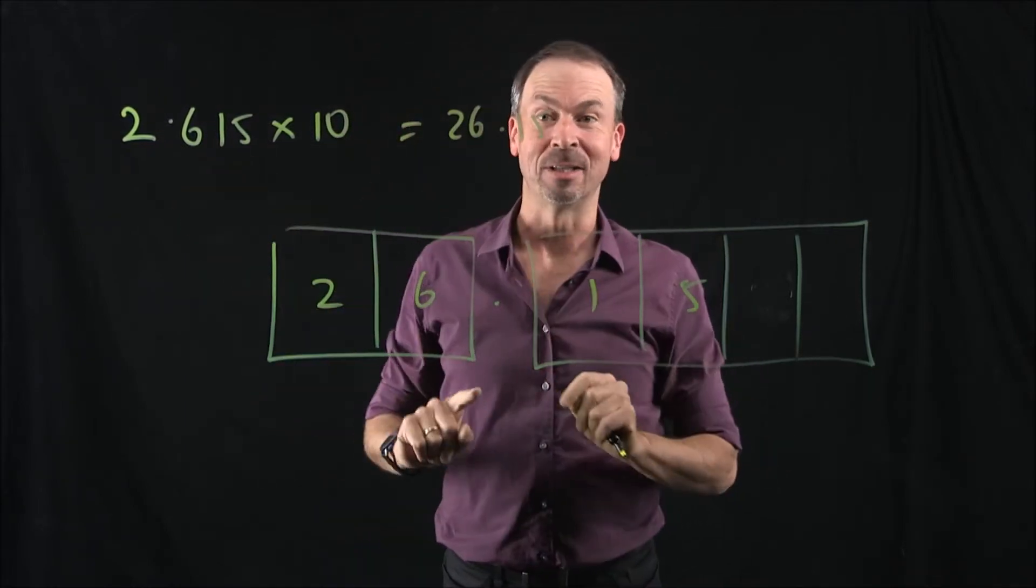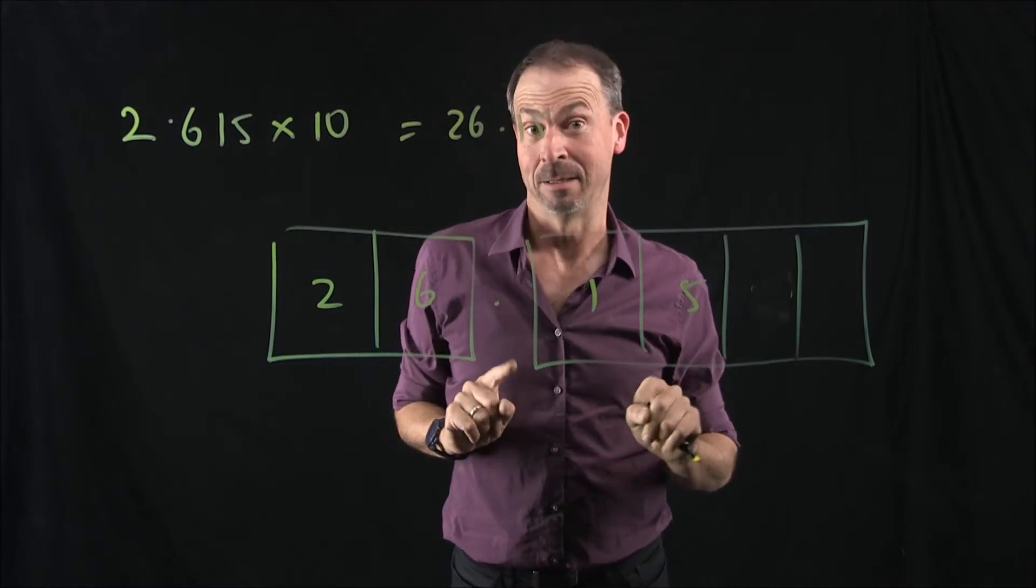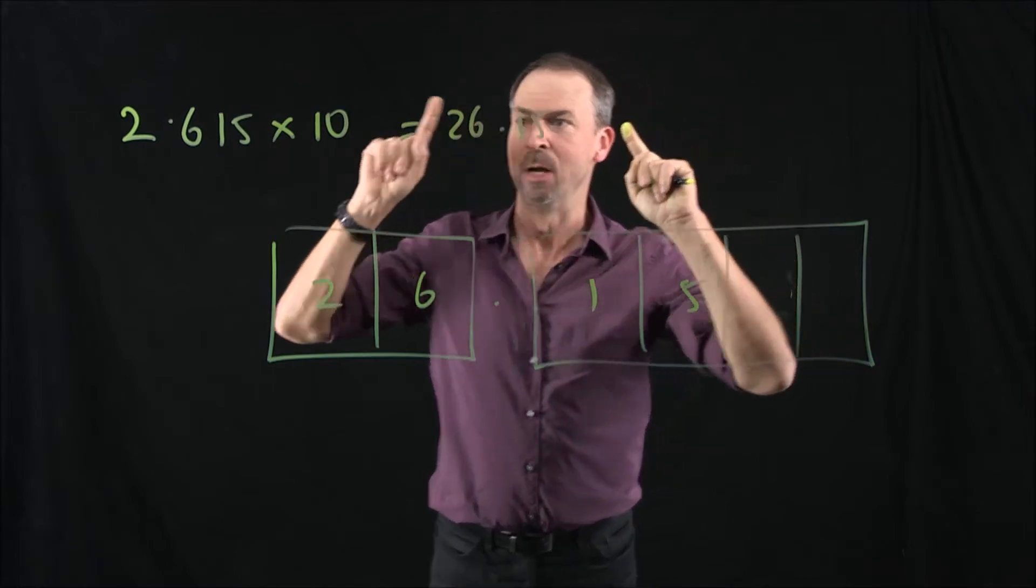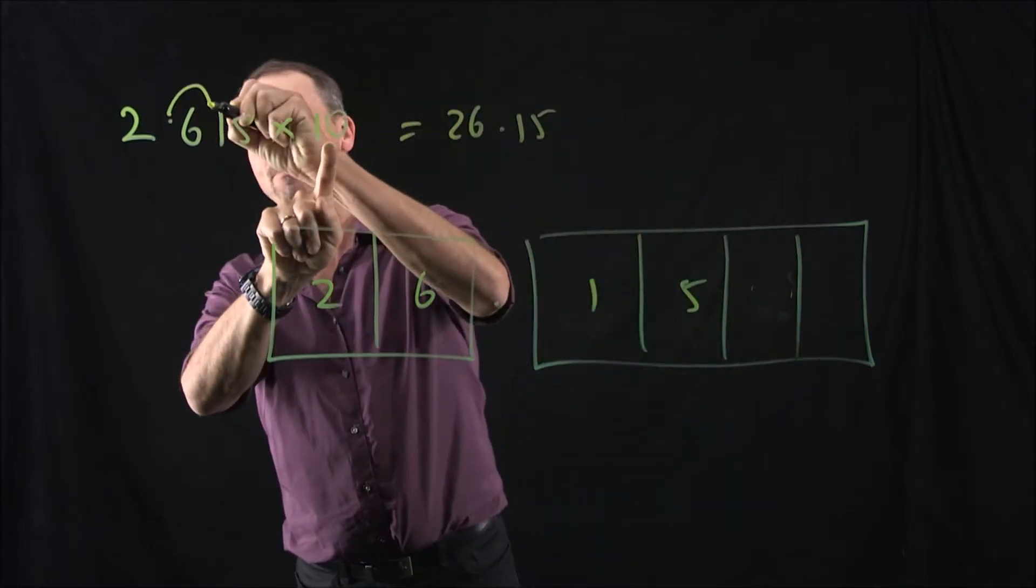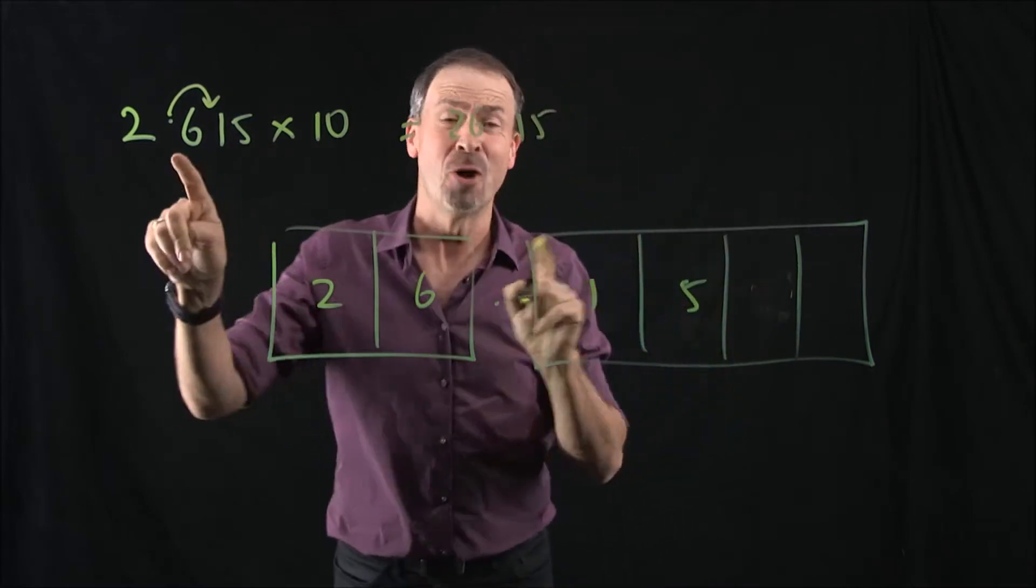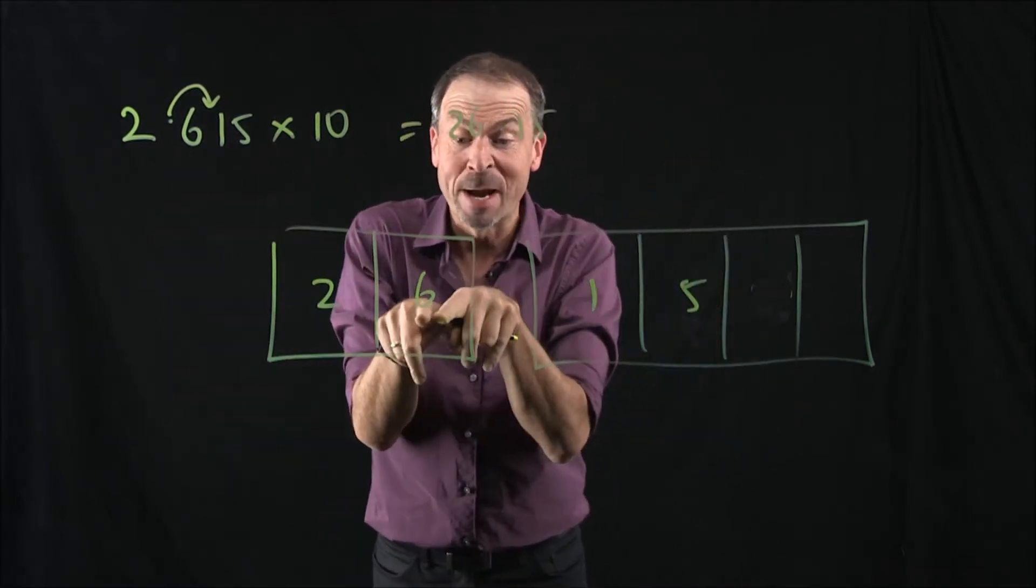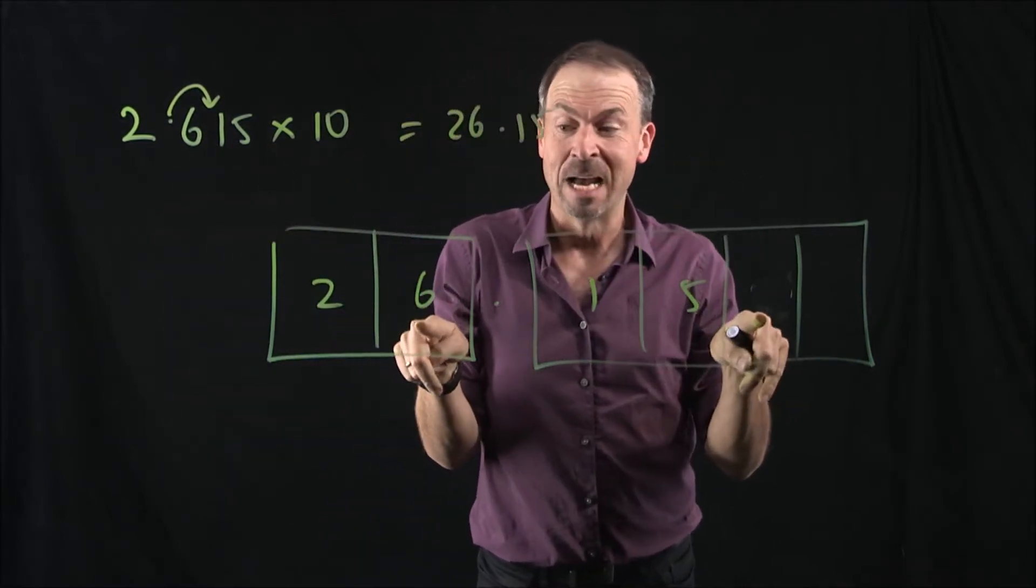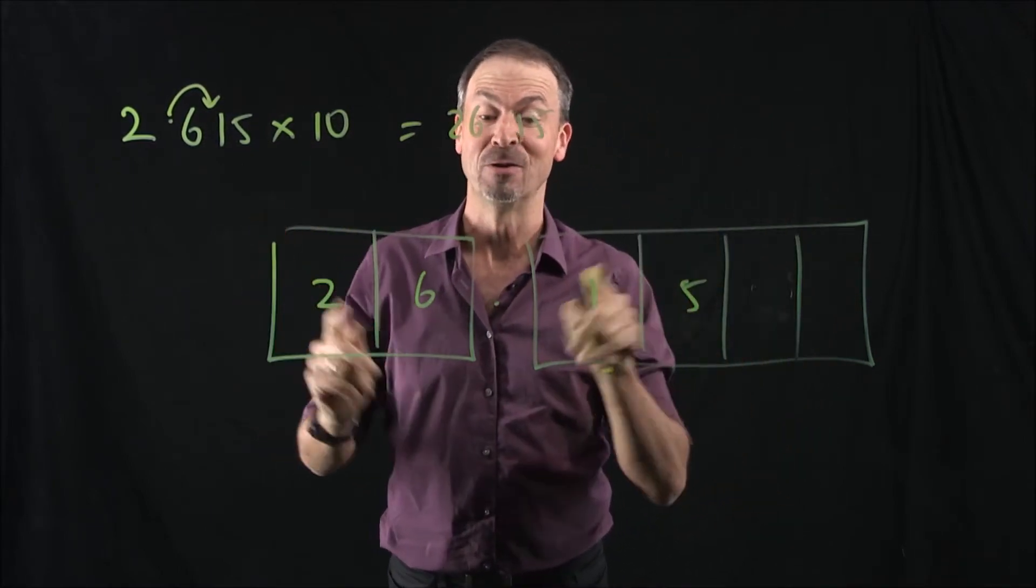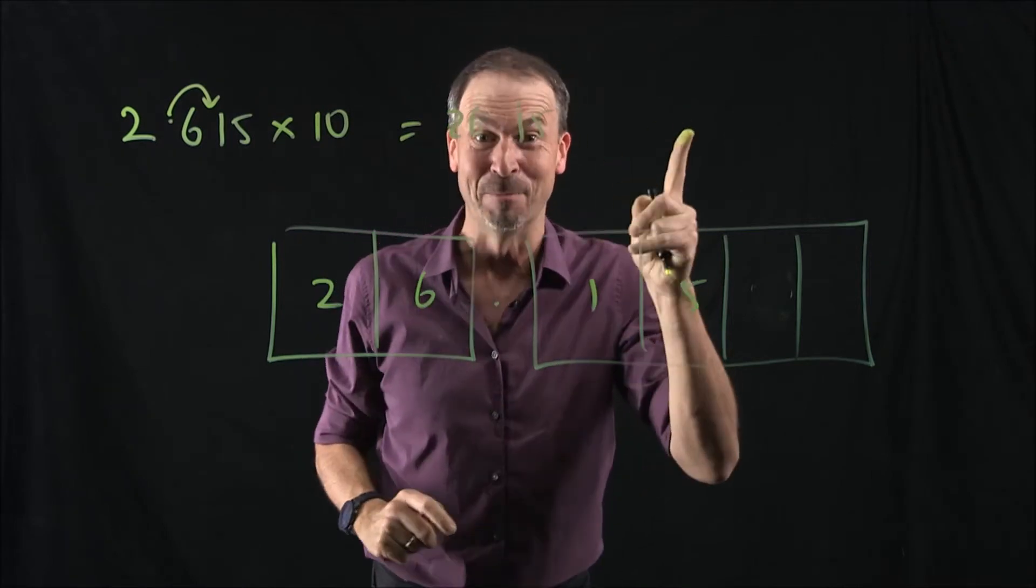Wow. It's the same digits, but the decimal point, they said in my school days, moved. They said to me, in fact, they made me memorize this rule: to multiply by 10, shift the decimal point one place to the left or right. Now, I can never remember which one it is. But the thing is, it's not actually the decimal point that's moving. Remember, we had 2, 6, 1, 5, and became 20, 60, 10, 50. It's actually the numbers because explosions shifted over. It's not the decimal point that's moving. It's kind of the numbers that are moving.